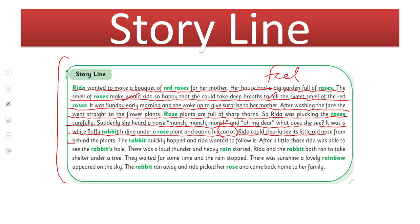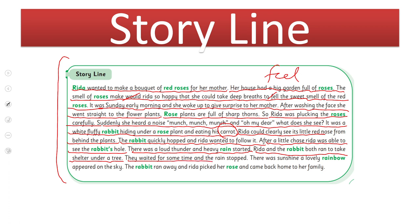Rida could clearly see its little red nose from behind the plants. The rabbit quickly hopped and Rida wanted to follow it. After a little chase, Rida was able to see the rabbit's hole. There was a loud thunder and heavy rain started. Rida and the rabbit both ran in to take shelter under the tree. They waited for some time and the rain stopped. There was sunshine and a lovely rainbow appeared on the sky. The rabbit ran away and Rida picked a rose and came back home to her family.